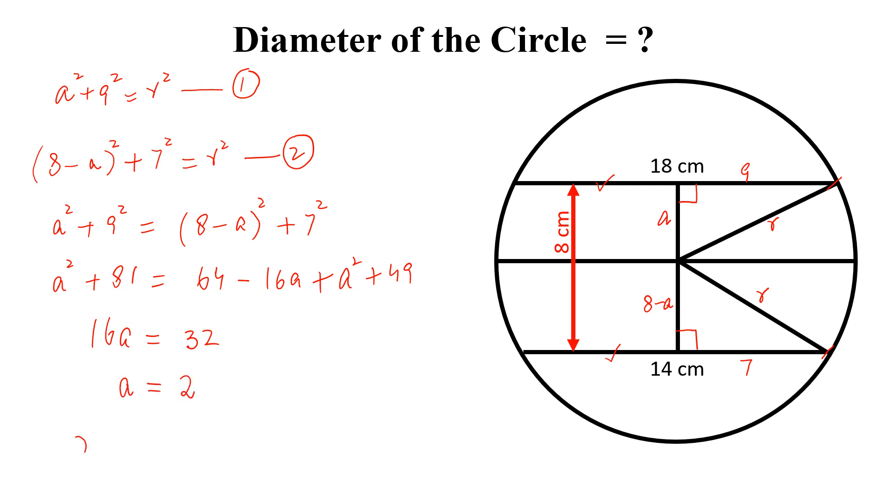So r square equal to a square plus 9 square and a is 2. So 2 square is 4, 4 plus 81 equal to 85 and r equal to square root of 85. So 2r, the diameter equal to 2 square root of 85 and this is the required answer.